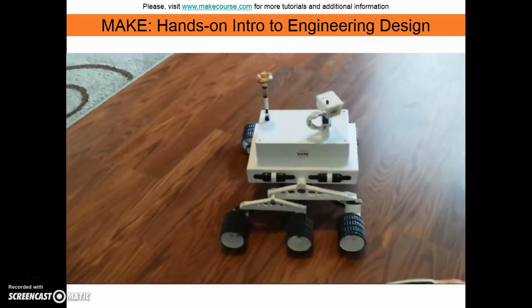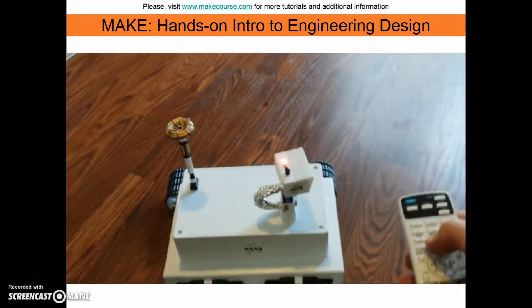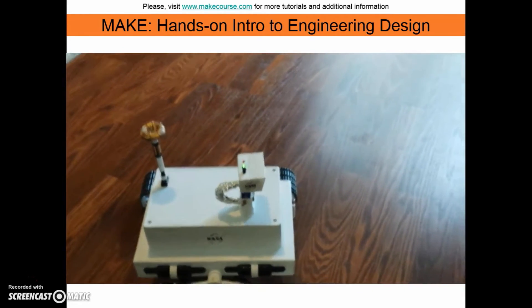If an object comes too close within the proximity of the rover, the red light will come on and the piezo siren will sound.